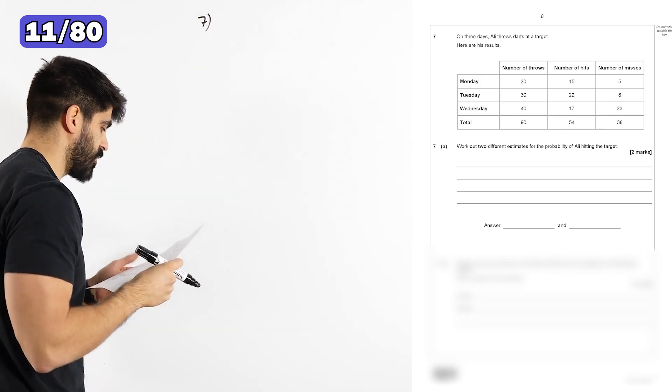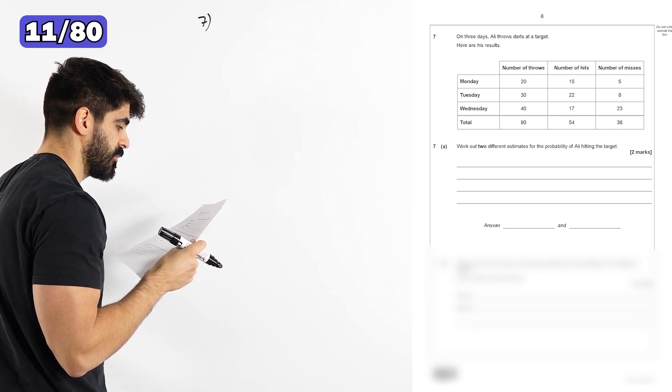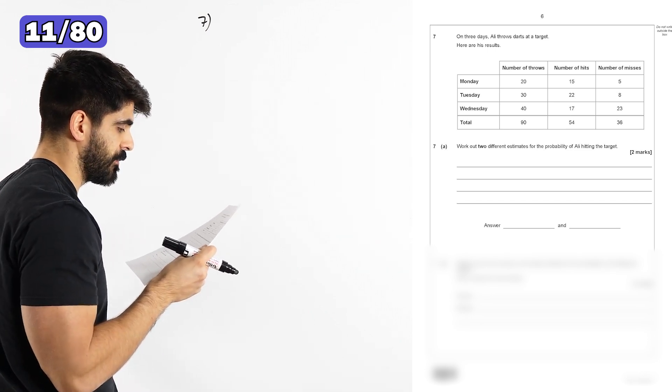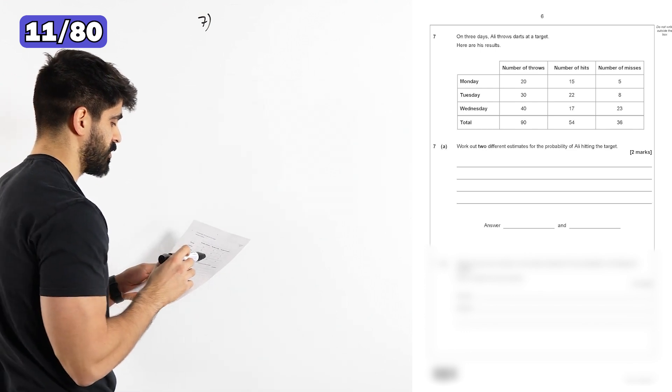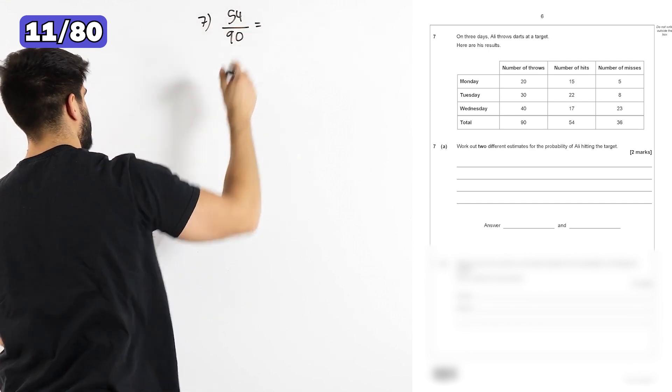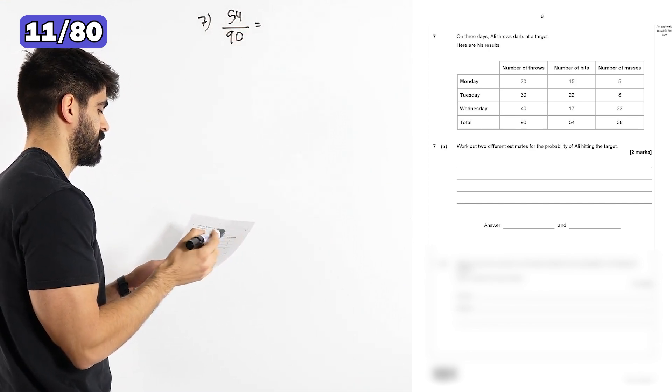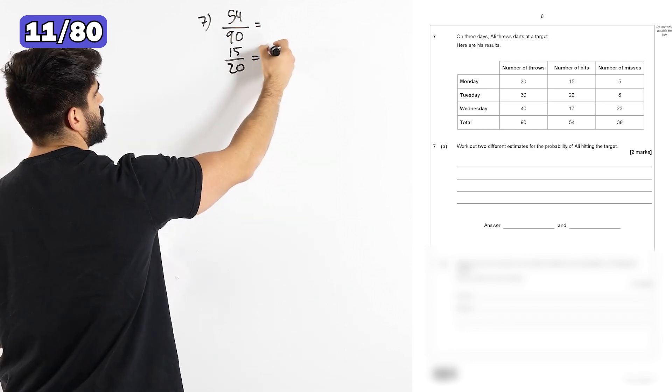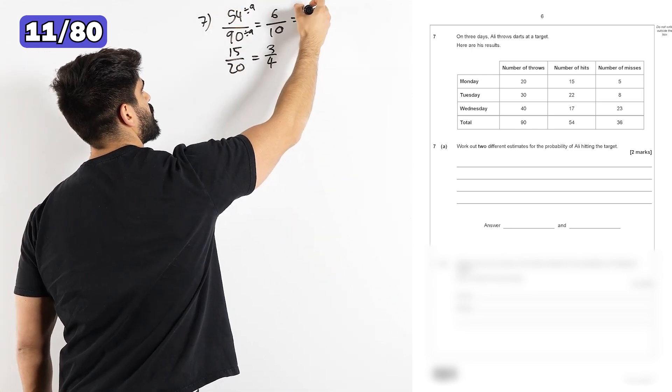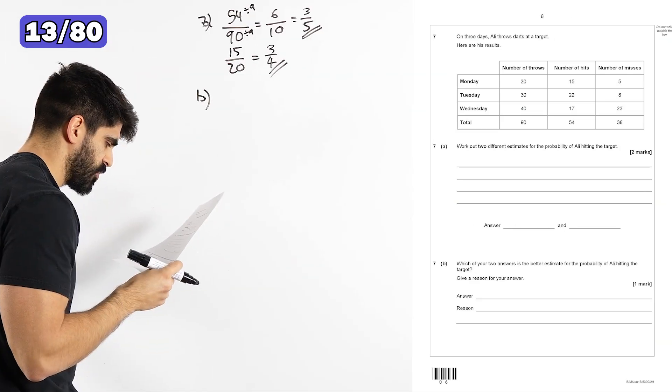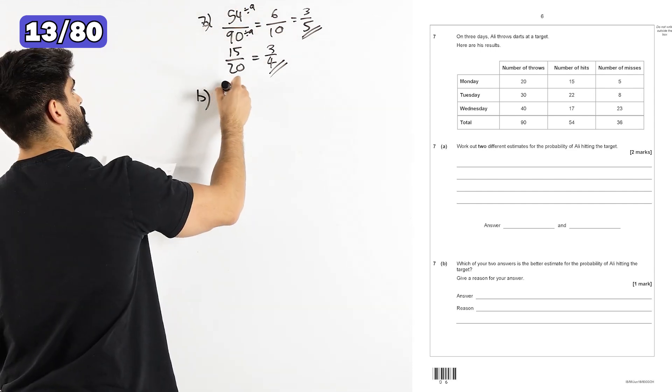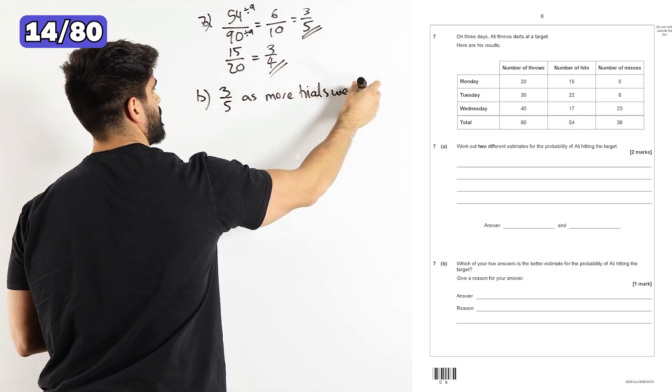Question seven. On three days, Ali throws darts at a target. Here are his results. Work out two different estimates for the probability of Ali hitting the target. The first one we could do is he hit the target 54 times out of 90, which we can simplify. Another one is, I guess we can just look at any of the rows. On Monday, he hit 15 out of 20. That'll be 3 quarters. 54 out of 90, we can divide by 9, which is 3 fifths. Which of your two answers is the best estimate? Well, definitely the first one because more trials. 3 fifths as more trials were taken into account.